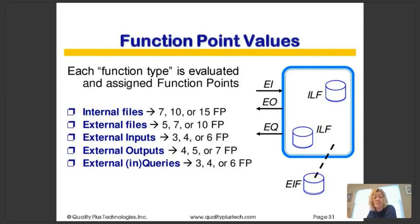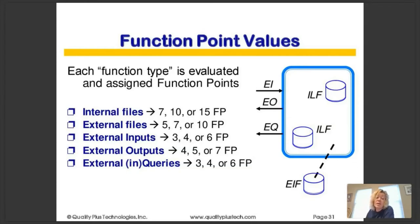We look at internal files, external files, inputs, outputs, and queries — and there's an entire methodology that is an ISO standard, a worldwide global standard for how many points and exactly what counts. Internal files are worth 7, 10, or 15 function points. External data is worth 5, 7, or 10. External input processes are worth 3, 4, or 6 function points. Outputs, which contain calculations or derived data, are worth 4, 5, or 7. External queries are worth 3, 4, or 6 function points. Each component gets a certain number of function points and we add all those up to give the floor plan size.